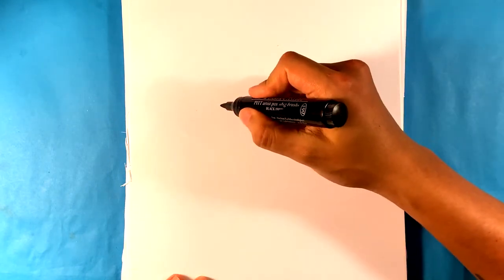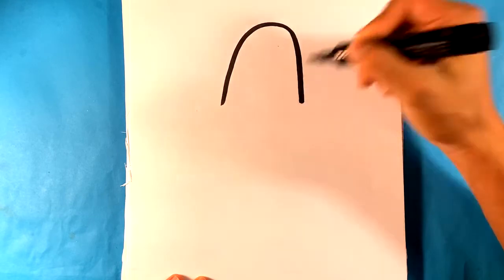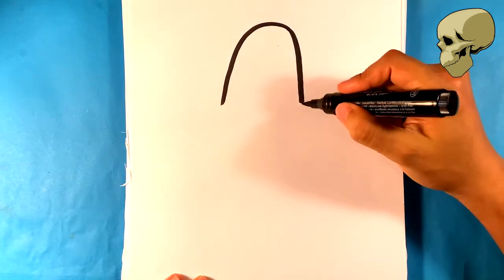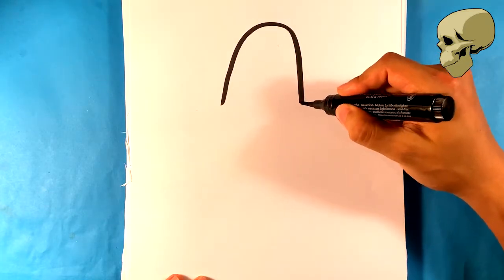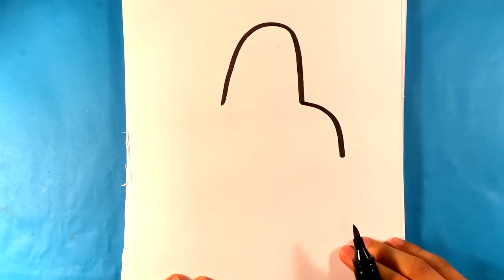I'm gonna draw kind of a hump shape in the middle. Alright, that's gonna be the head. I'm gonna pull a hump shape on the side - it's gonna be his hand sticking out.